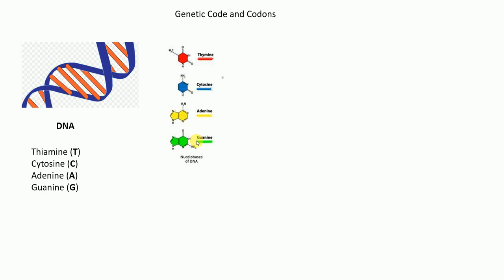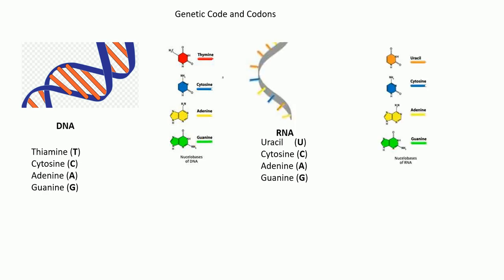In RNA, in place of thymine (T), we have uracil (U). So the nucleotide bases of RNA are uracil, cytosine, adenine, and guanine — U, C, A, G. Unlike DNA, RNA is a single-stranded structure. So the key difference is that RNA has uracil in place of thymine.